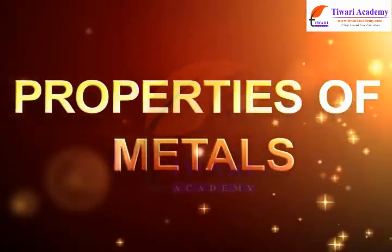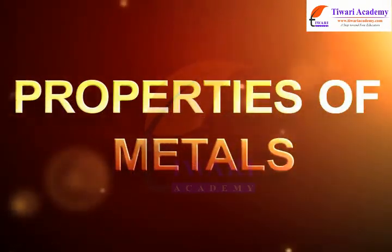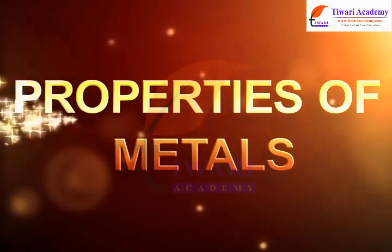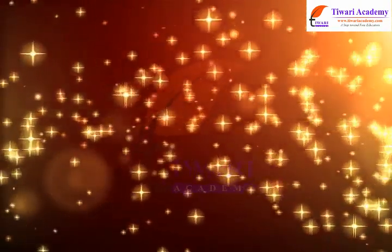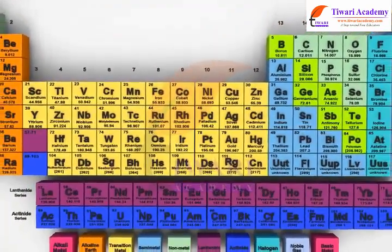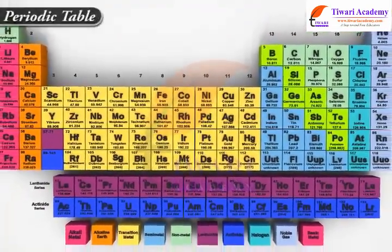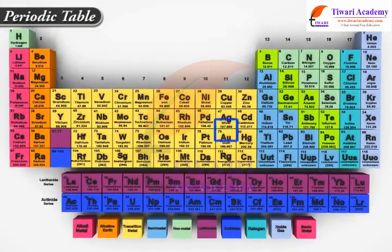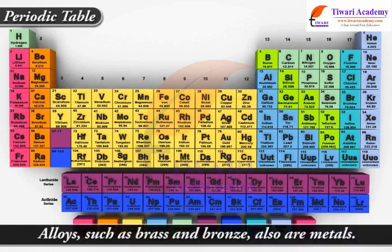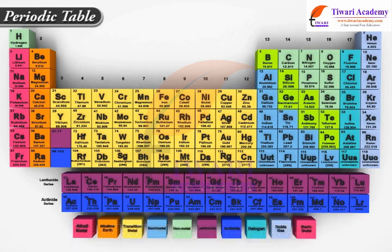Properties of metals. Most of the elements on the periodic table are metals, including gold, silver, platinum, mercury, uranium, aluminum, sodium, and calcium. Alloys such as brass and bronze also are metals.